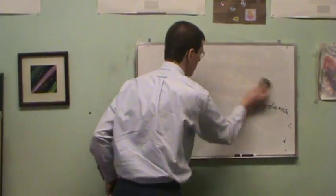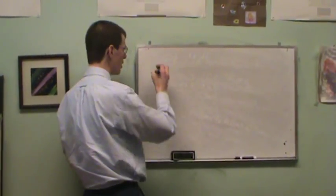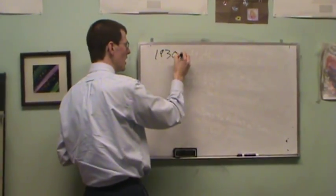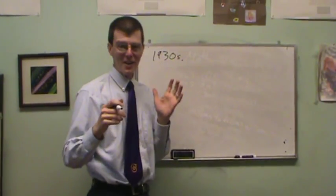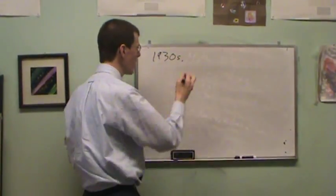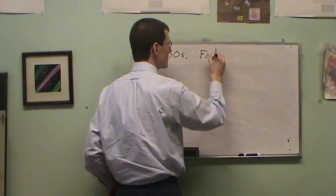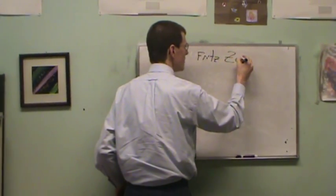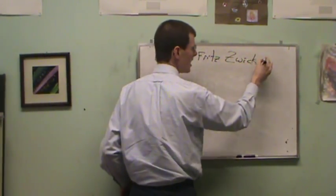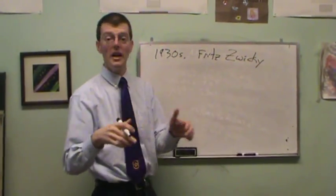So what's the evidence? Science is all about evidence. The first evidence for dark matter started back in the 1930s. There was this awesome, really cool, and just eccentric as all get out astronomer. His name was Fritz Zwicky.